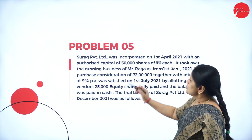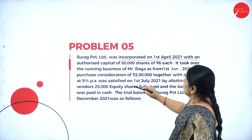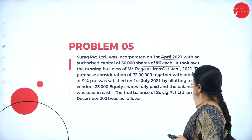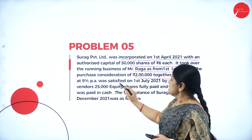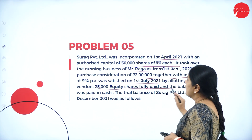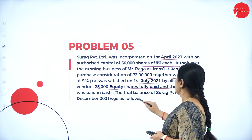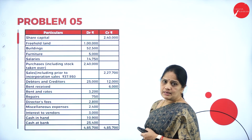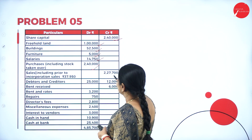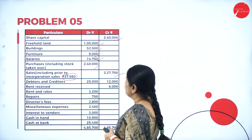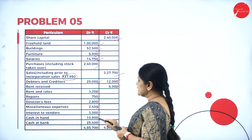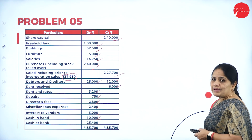Now let us see the next problem. Surak Private Limited was incorporated on 1st April 2021 with an authorized capital of 50,000 shares of Rs. 6 each. It took over the running business from Raga from 1st January 2021. The purchase consideration of 2 lakhs along with interest was satisfied on 1st July 2021 by allotting 25,000 equity shares fully paid, and the balance was paid in cash. The trial balance as on 31st December is given, showing share capital, freehold land, building, furniture, salaries, purchases, sales, debtors, creditors, rent received, rent and rates, repairs, director's fees, miscellaneous expenses, interest on vendors, cash in hand, and cash at bank.